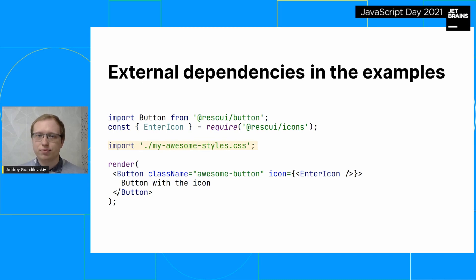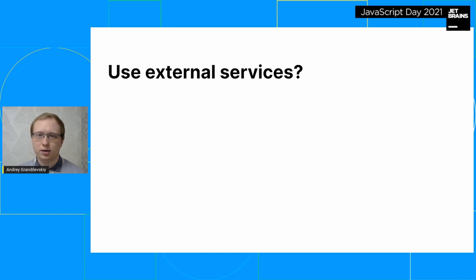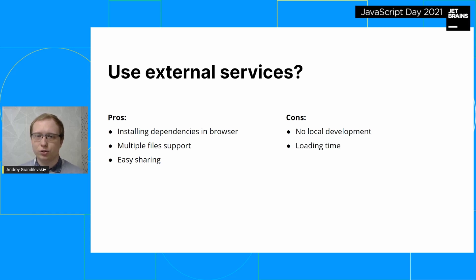A significant part of libraries use external services for their examples, such as CodeSandbox, JS Fiddle, StackBlitz, and so on. The advantages include the ability to install and change dependencies directly in the browser, work with multiple files at once, and easily share a new version when an example changes. But there are also disadvantages: the inability to use these examples during local development, relatively long loading time since each example is a separate page, context switching between documentation and examples may be tedious, and the need to keep examples up to date in parallel with the documentation itself.